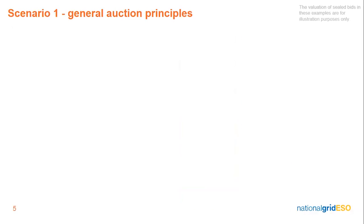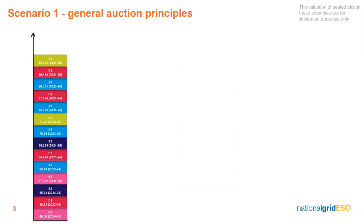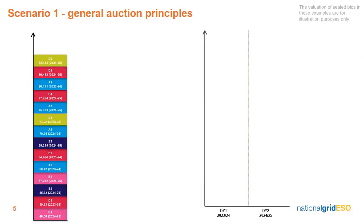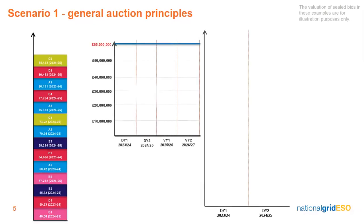Scenario 1: General Auction Principles. On the left is the bid stack ordered from cheapest to most expensive bids, regardless of delivery years. On the right we have an auction stack showing both delivery years, which will demonstrate how the bids are assessed by the system. In the middle is the monetary budget profile, demonstrating what the budget impact for each individual bid is in relation to all other bids across both delivery years and the two valuation years. In the final valuation year, a full year's budget impact is assessed.